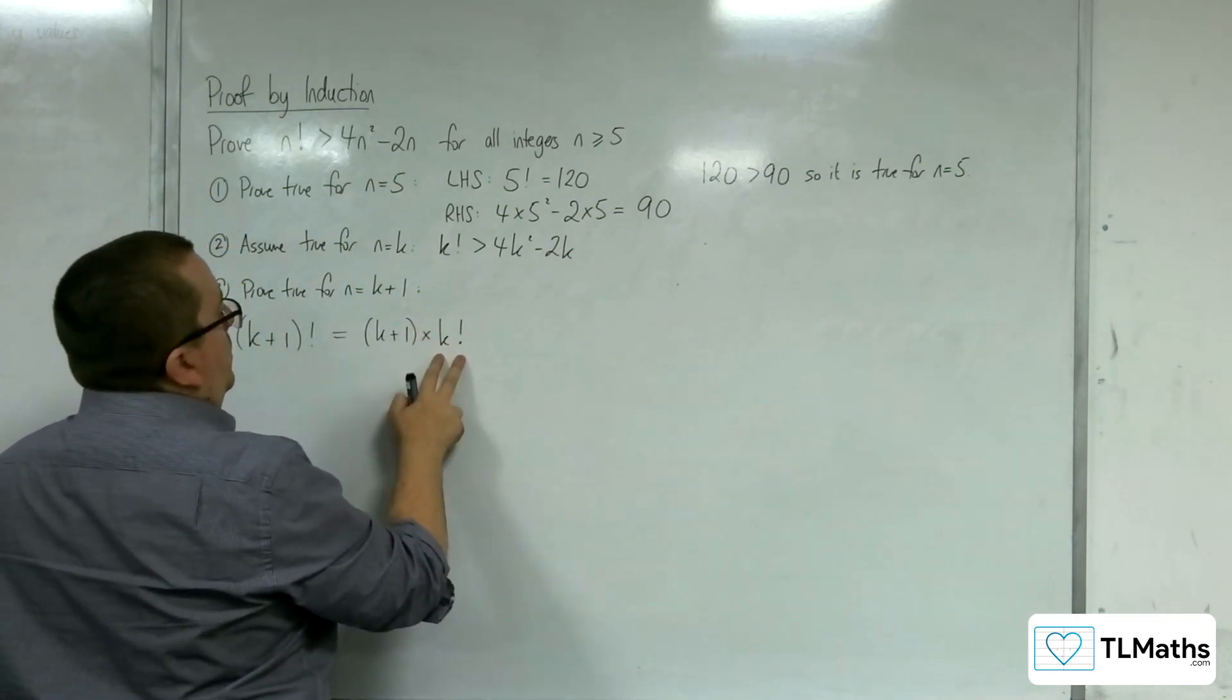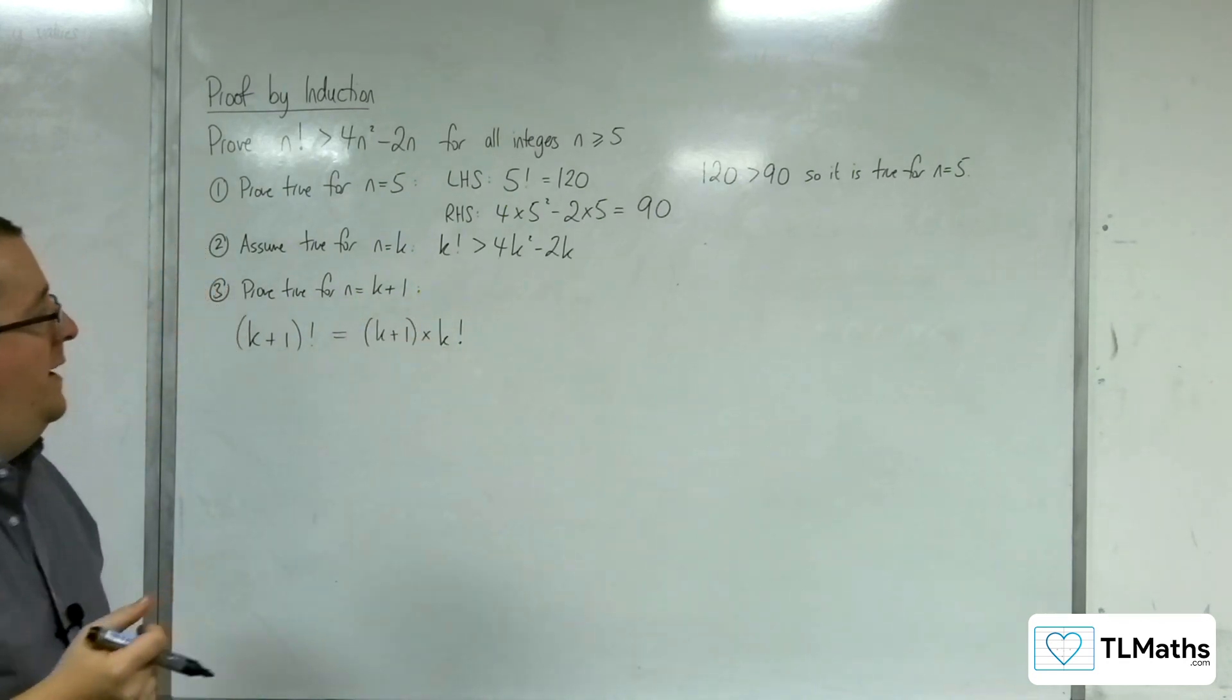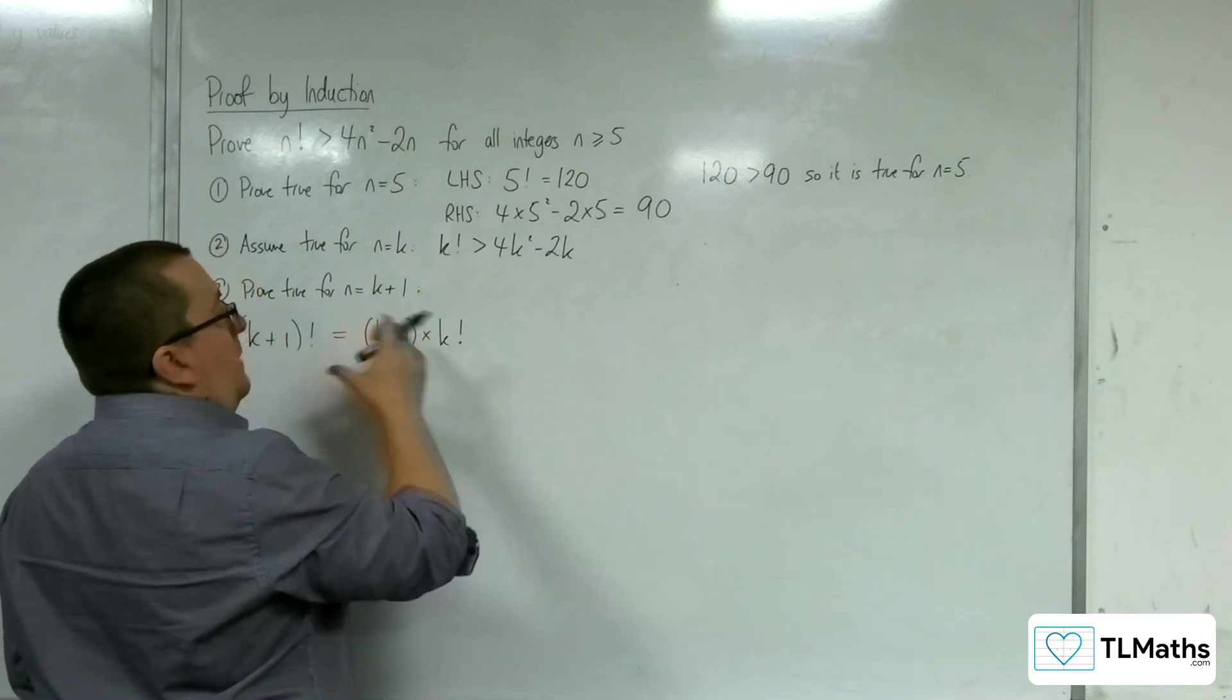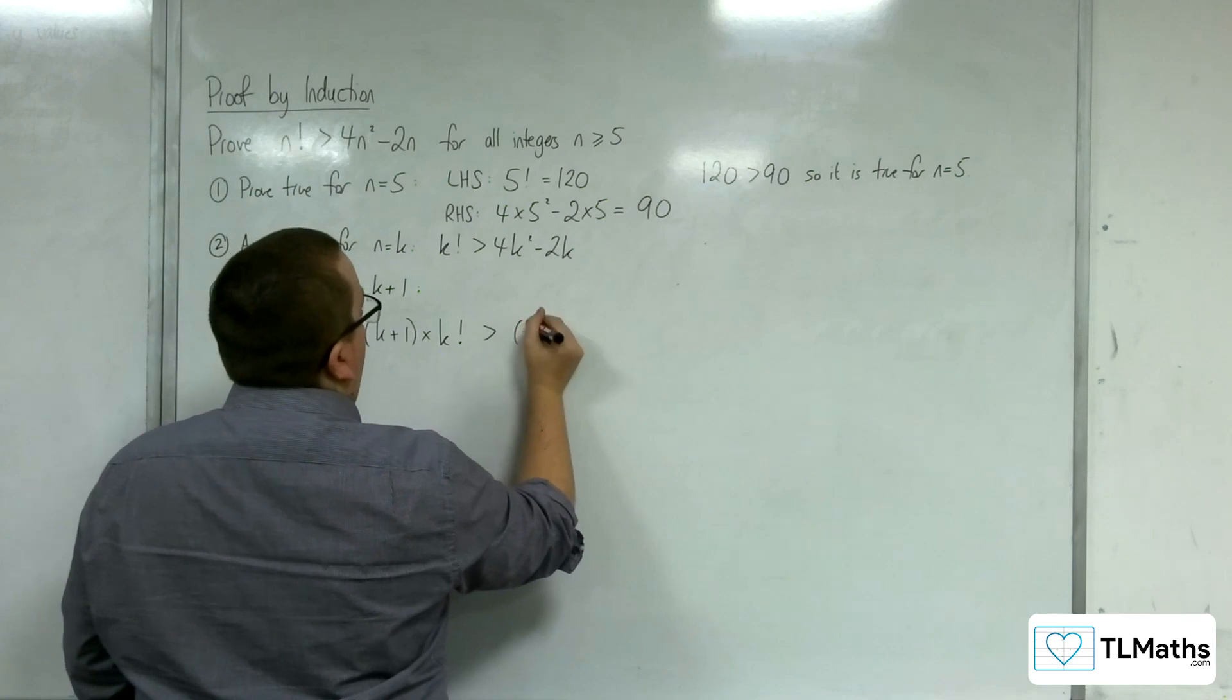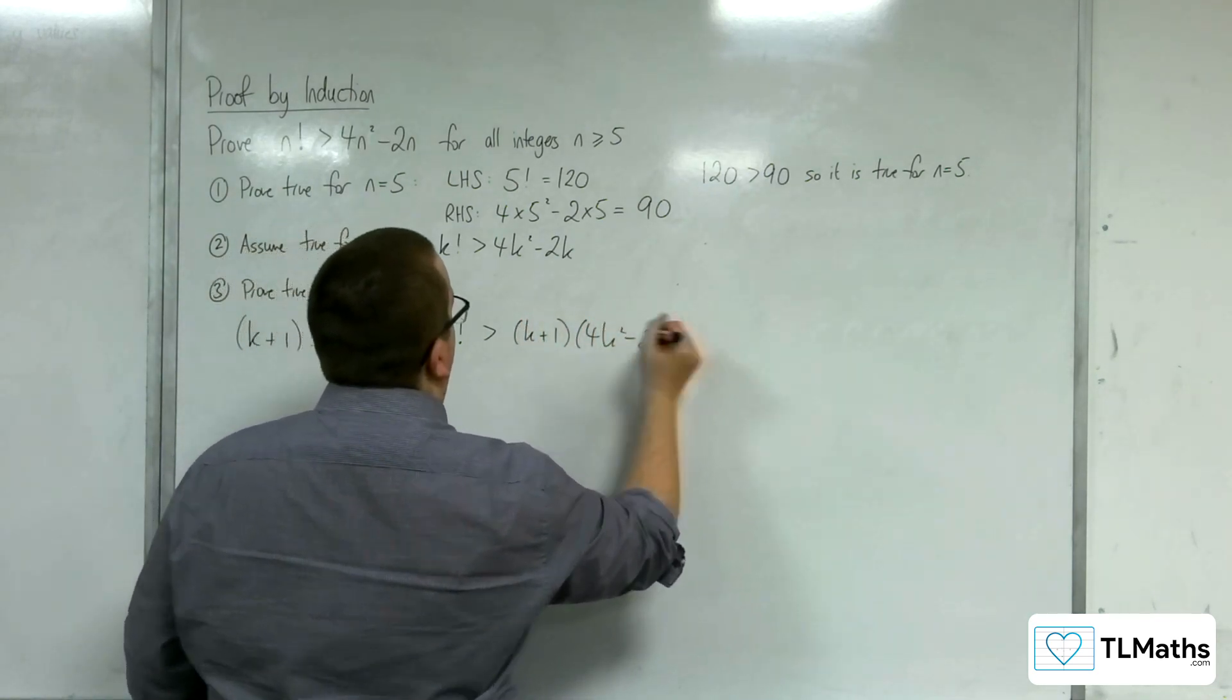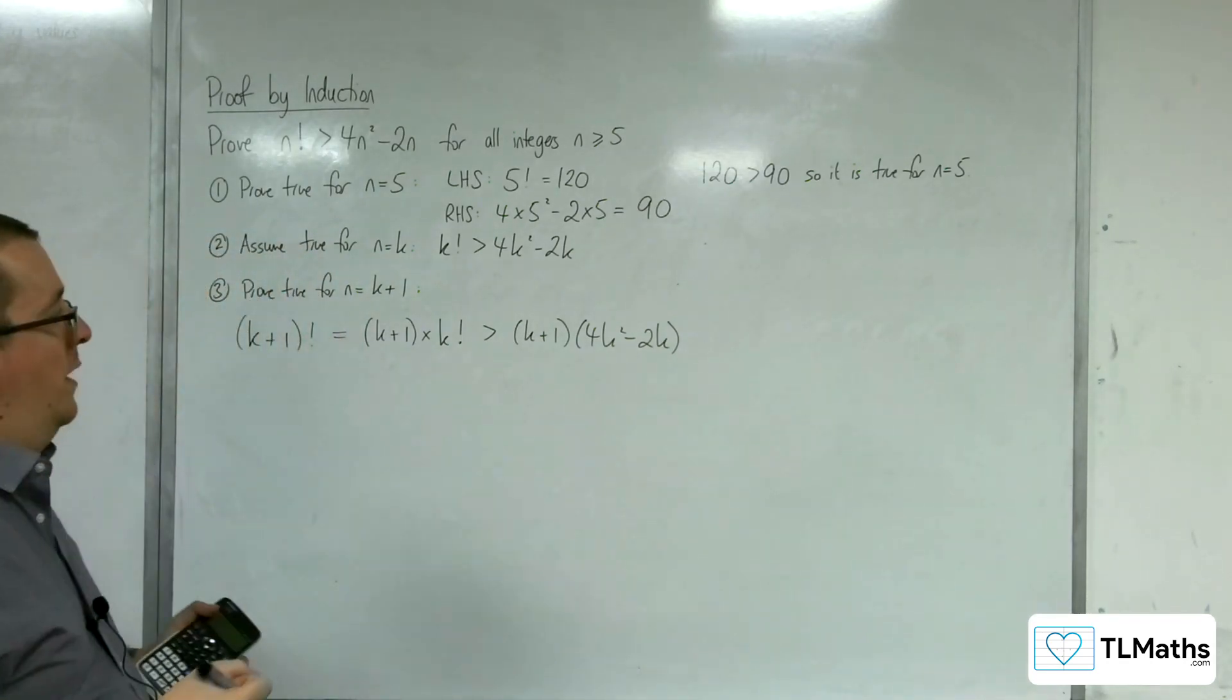Now we've assumed that k factorial is greater than 4k squared minus 2k. So k plus 1 being a positive integer multiplied by that means that must be greater than k plus 1 times 4k squared minus 2k. So multiplying both sides by k plus 1.